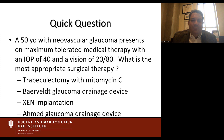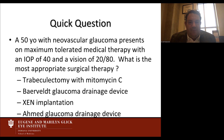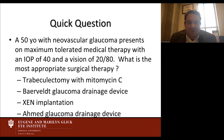Now a quick interactive question: a 50-year-old with neovascular glaucoma presents on maximum tolerated medical therapy with a pressure of 40 and vision of 20/80. What is the most appropriate surgical therapy? Results showed most people wouldn't do a Xen, and between Ahmed, trabeculectomy, and Baerveldt, Ahmed implants came out ahead — and I would go with the majority here. I'll explain why with the next trial.